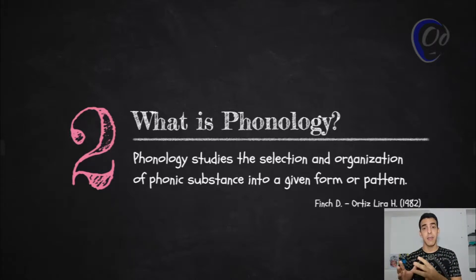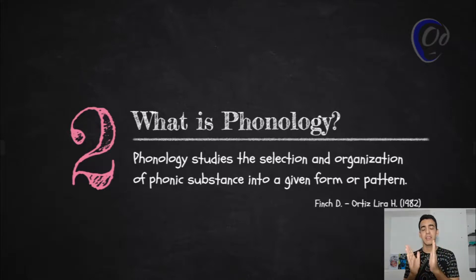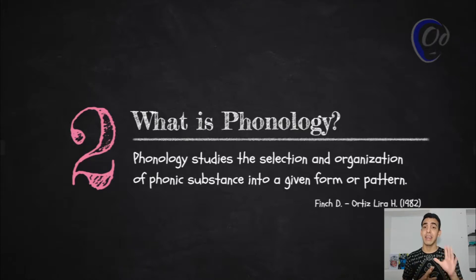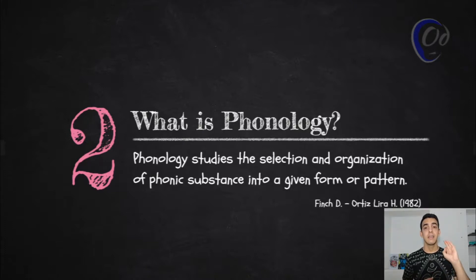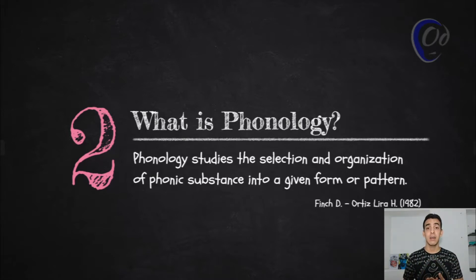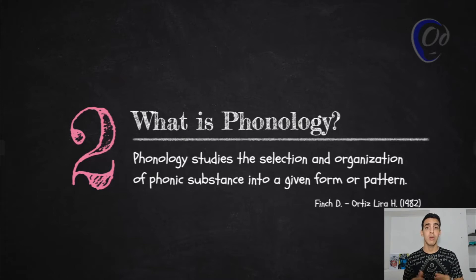Phonetics studies how the sounds are made and how the sounds are perceived. And phonology will study the selection and organization of these sounds that we use to communicate. For example, let's take the word 'cat.' Cat has three phonemes. Phonology will tell you that the first and last sounds are consonants and the middle sound is a vowel, and that you have to place them into a certain pattern — consonant, vowel, consonant — in order to communicate something. So this is a rough difference between phonetics and phonology. Let's go on with this practice.